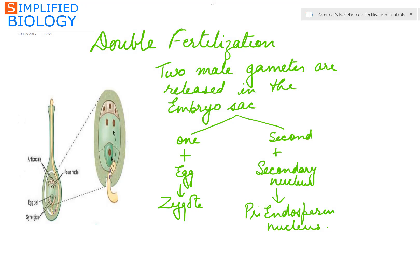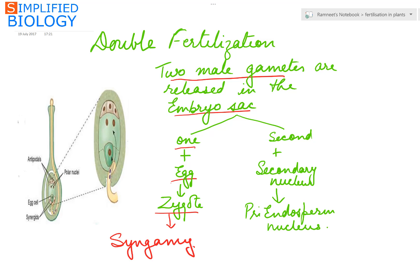After entering the embryo sac, the pollen tube releases the two male gametes. One male gamete fuses with the egg to form the zygote — this is known as syngamy or fertilization. The other male gamete fuses with the secondary nucleus to form the primary endosperm nucleus, which is known as triple fusion.